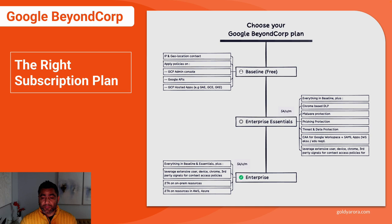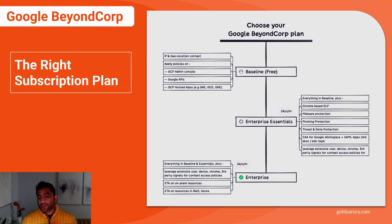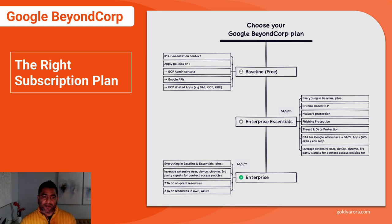The first one is called the Baseline, or it's a free plan. It's not strictly a BeyondCorp plan, but you still get some zero trust controls as soon as you sign up for Google Cloud Platform — it is available for free. You can create IP address and geolocation context-based policies on the Google Cloud Platform Admin Console, APIs, and applications you host inside GCP like App Engine, Compute Engine, and Kubernetes Engine. For example, you can create a policy where an admin must be accessing from the United States; if the request comes from any other country, it is treated as unauthorized and access is denied.